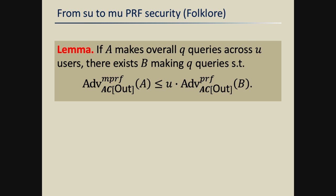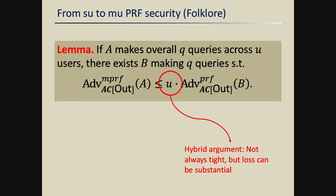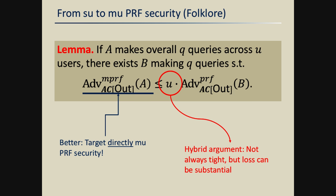There's a folklore fact that relates multi-user and single-user security: the multi-user security can never be more than U times worse than the single-user security in concrete terms, where U is a bound on the number of users or instances the distinguisher queries. This is proven by a standard hybrid argument, but this factor-U loss can be as large as the number of queries in the worst case. Fortunately, it's not always necessary — in many cases it's worthwhile to prove bounds on multi-user security directly.